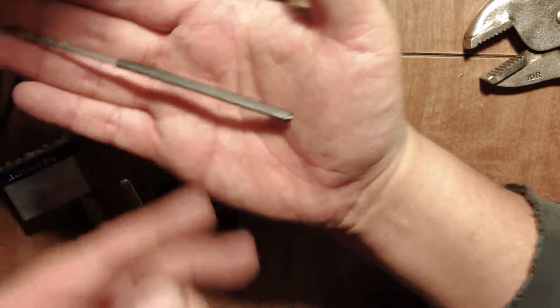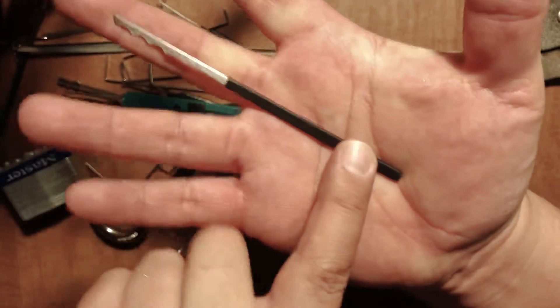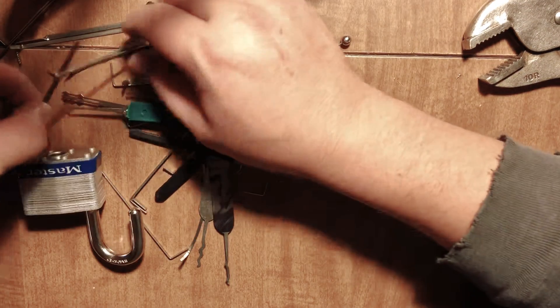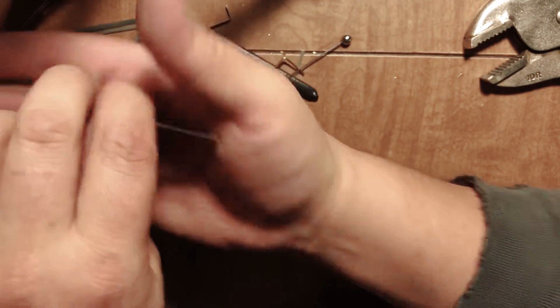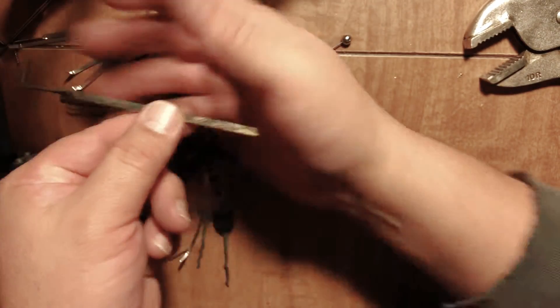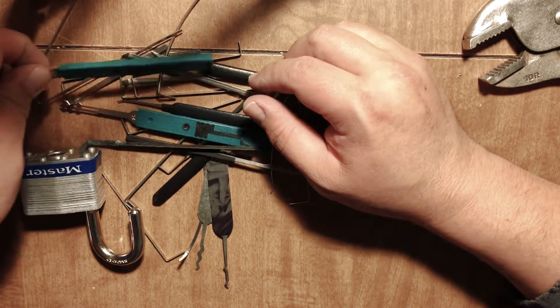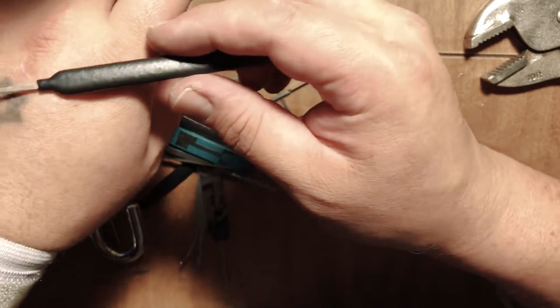You know, this I made out of a street sweeper blade. Then I just shrink tubed it. Here's my street sweeper blade tension wrench. It's kind of huge, kind of like not very many things I can put it in, but sometimes you just have a big, huge keyway. Then I got like a nice Sparrows hook.